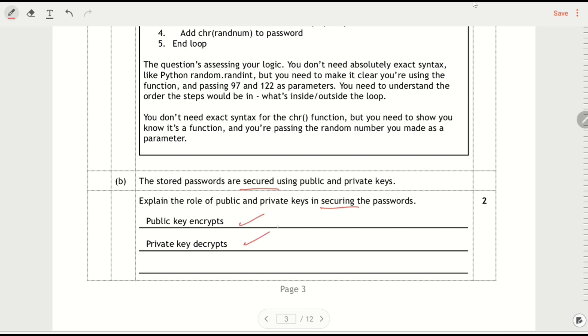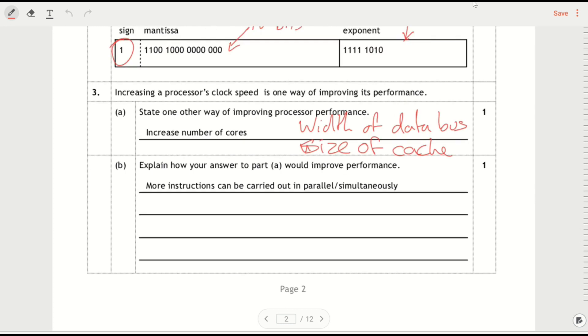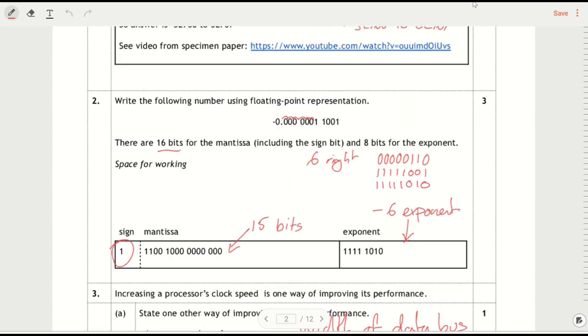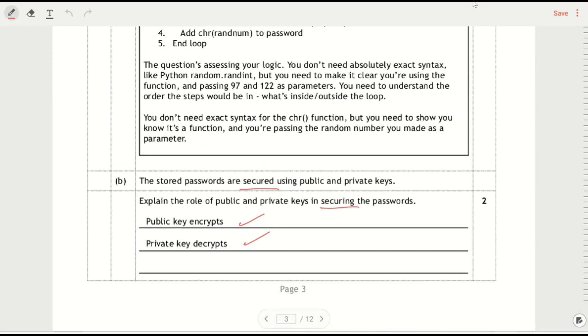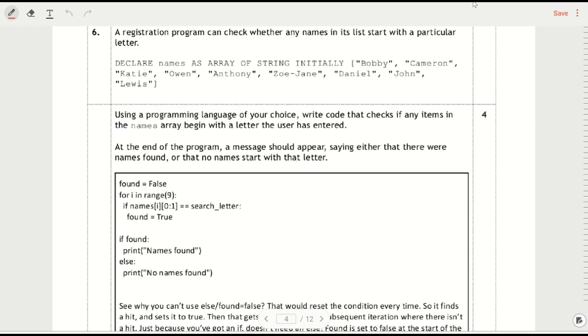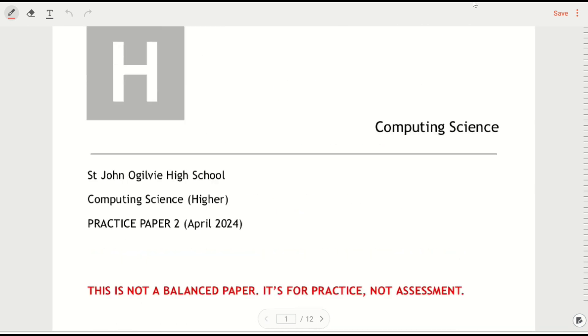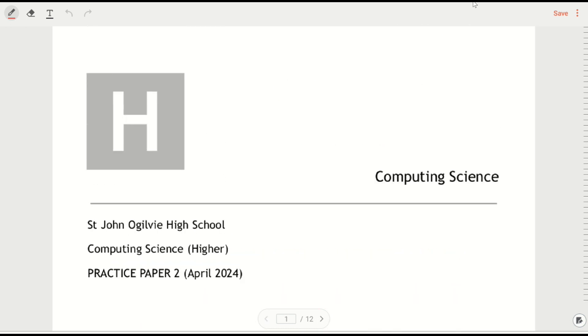The easiest answer that you can give is that you say that the public key encrypts, the private key decrypts. It seems a very short answer, but you've covered both of the points there. And this was in the 2023 exam, or at least just the encryption part was. And then I'm going to go through some of the standalone longer software development questions.